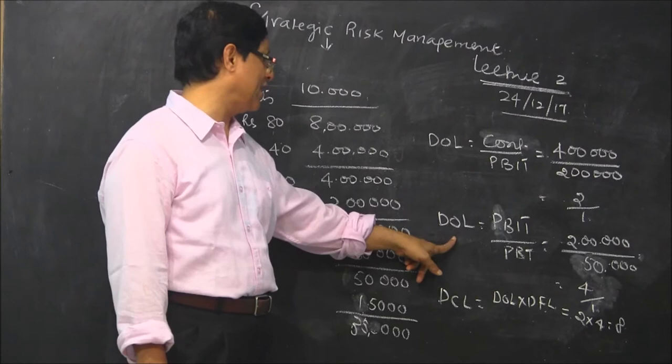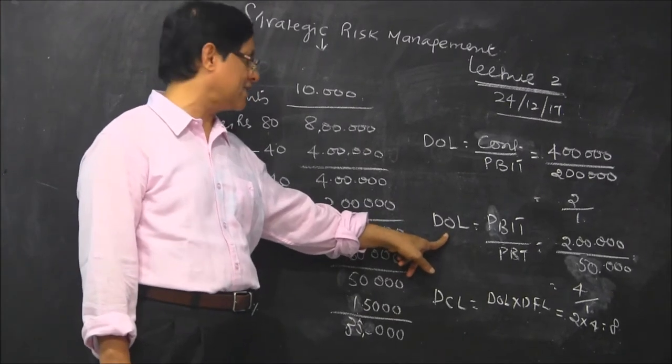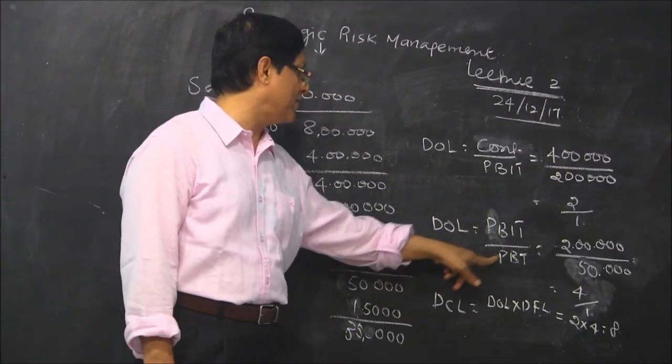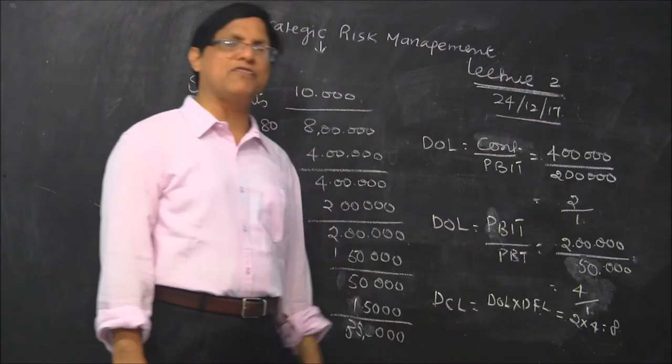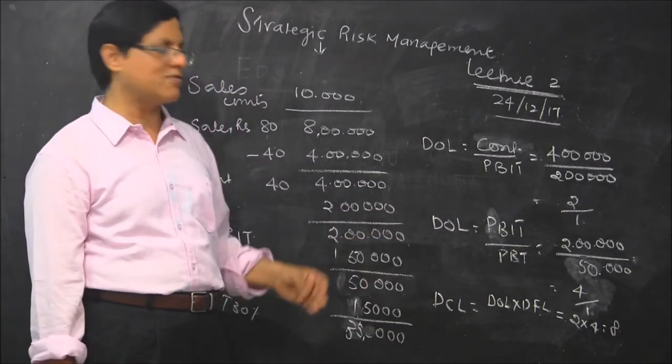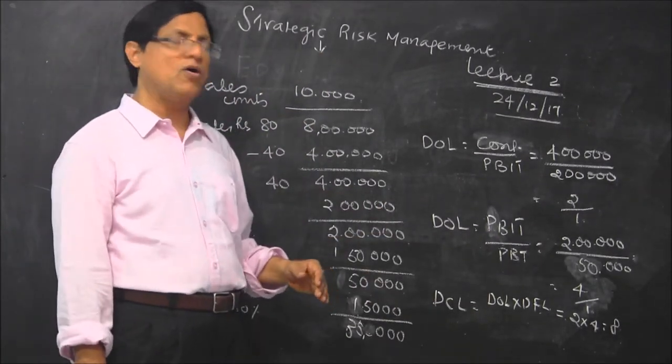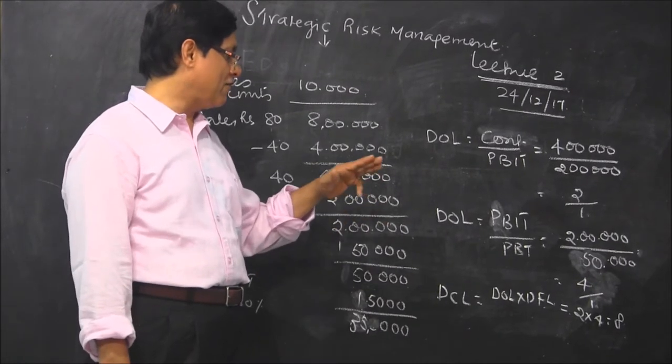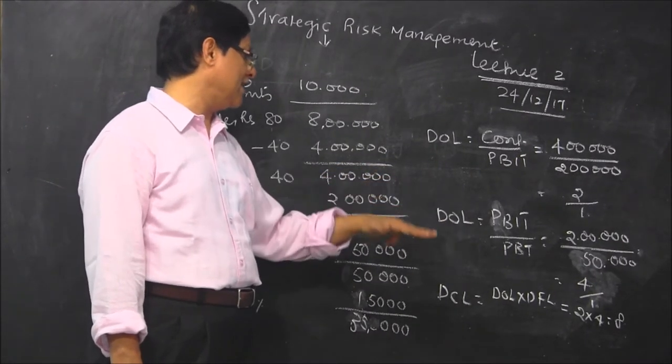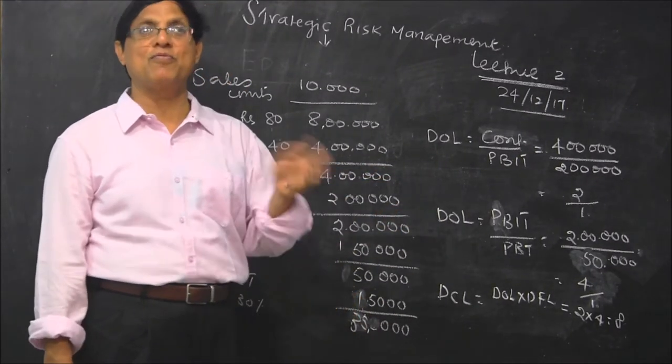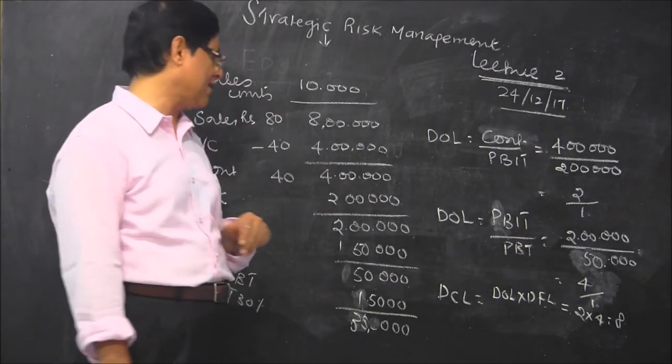Similarly here, operating leverage which arises because of interest. PBIT divided by PBT is 2 lakhs divided by 50,000, that is 4 times. So that means 4 is the PBIT, 1 is PBT, so 4 minus 1, 3 is the interest. That is the understanding.